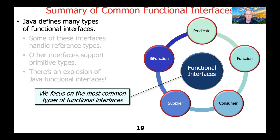In the next parts of this lesson, we'll focus on the most common functional interfaces: Predicate, Function, BiFunction, Supplier, and Consumer. There are many others, but we'll look at these for two reasons: they're very common, and they're used quite a bit with the Java streams framework, which is a more advanced form of functional programming in modern Java.